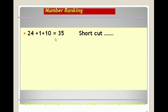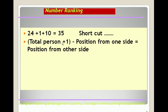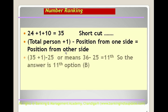Shortcut method: total persons = 35, add 1 → 36, then subtract position from one side → 36 − 25 = 11. So her position from the other end is 11th. The answer is option B.